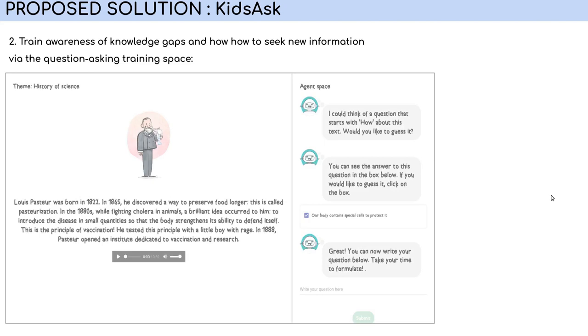After this space, children move to the QA training space where we want them to work on identifying their knowledge gaps and transferring them into learning goals by asking higher level questions. Concretely, we do this by offering different texts related to a theme of the children's choice. For each text, children will interact with the agent that will try to help them think of curiosity-driven questions. It will do so by proposing two types of cues.